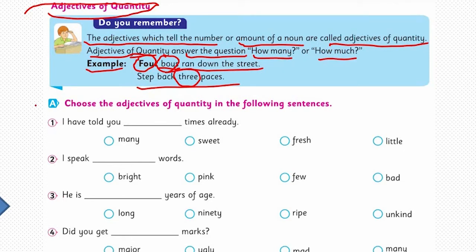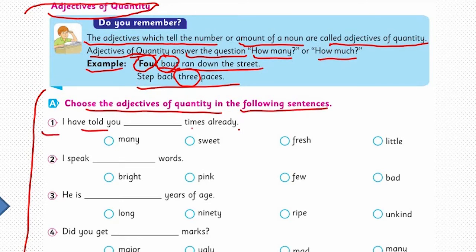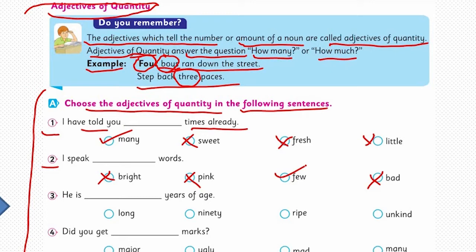Now let's do the exercise — choose the adjectives of quantity in the following sentences. The first one: 'I have told you ___ times already.' Sweet and fresh are quality adjectives; 'little' is grammatically inappropriate here. So 'many times' is the right option. The second one: 'I speak ___ words.' Bright, pink, and bad are quality adjectives. Yes — 'few' is a quantity: 'I speak few words.' The third one: 'He is ___ years of age.' Long is inappropriate; ripe and unkind are not applicable. Yes, '90' is the correct quantity here.